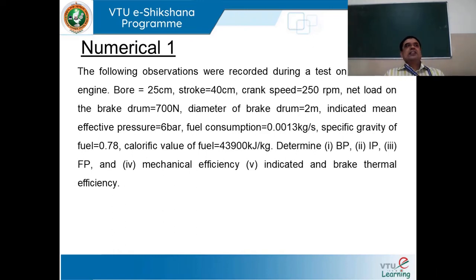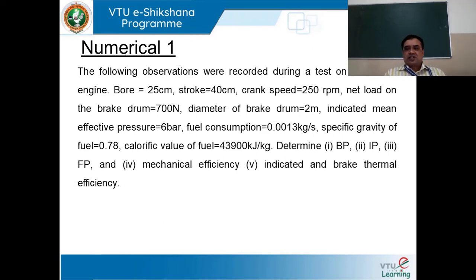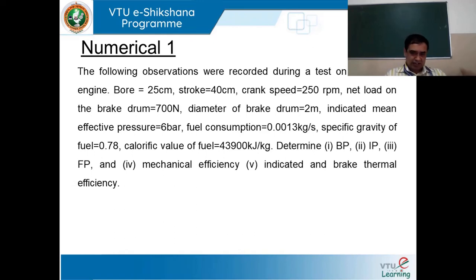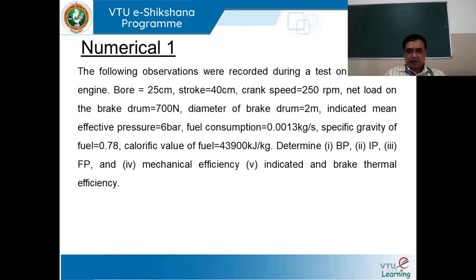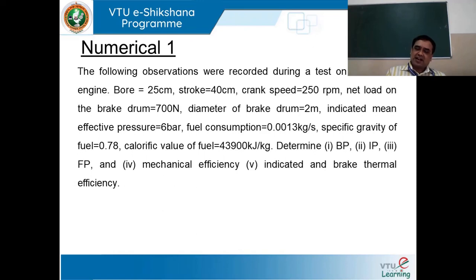The difference between indicated and brake power will help in calculating the power lost due to friction. So the three values of power we normally calculate are indicated power, brake power, and friction power. Next comes the computation of mechanical efficiency. Mechanical efficiency is defined as the ratio of output power to input power — output power is brake power, input power is indicated power. So brake power divided by indicated power multiplied by 100 gives mechanical efficiency.